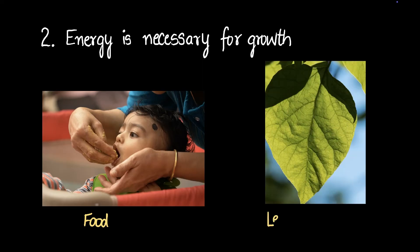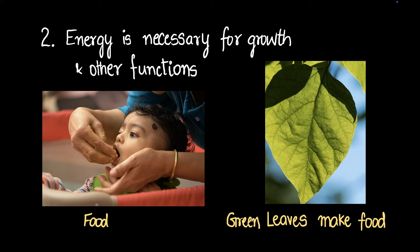Similarly with plants, leaves make food. Green leaves make food for the plant. And so energy is necessary for growth of plants and animals and also for other functions. For example, you need energy to work, you need energy for digestion, you need energy for everything. So energy is consumed by plants and animals alike for growth and other bodily functions. That was our second characteristic.